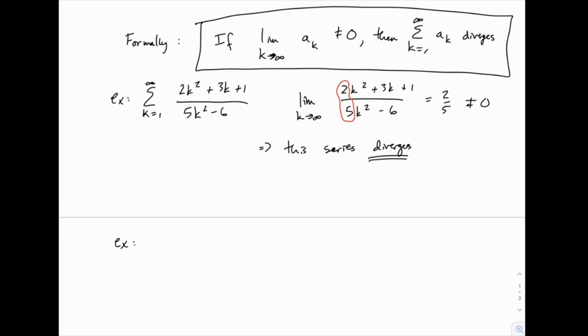For another example, we could have the series from k equals 1 to infinity of sine of k. And we can think about what this limit would be as k goes to infinity. Think about what the limit of the sine function does as k goes to infinity. In other words, as you move to the right along this sine wave, what happens to those values? Do they ever settle down to anything? And the answer is they don't.